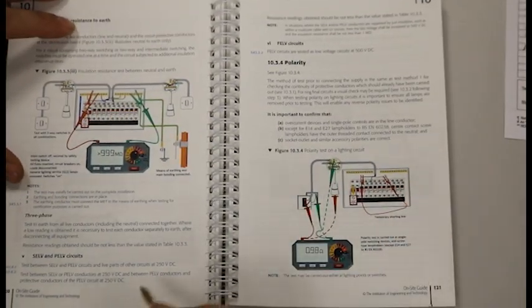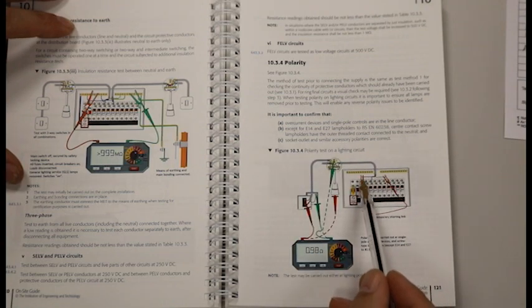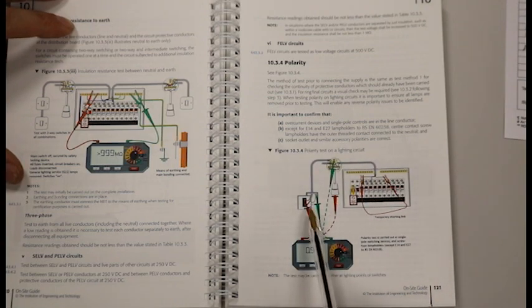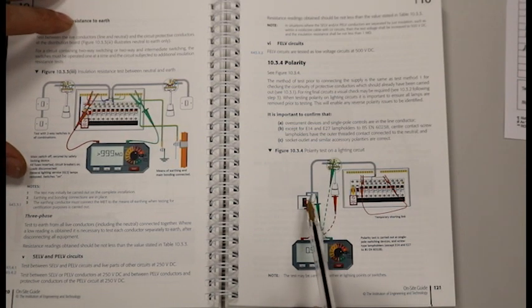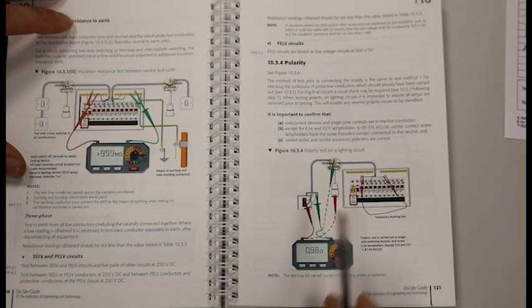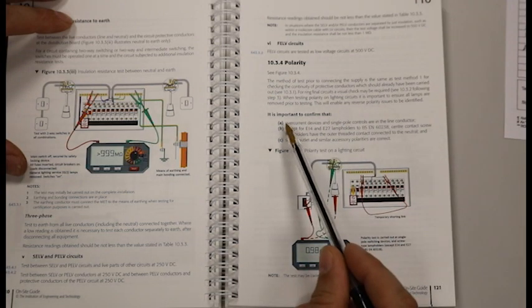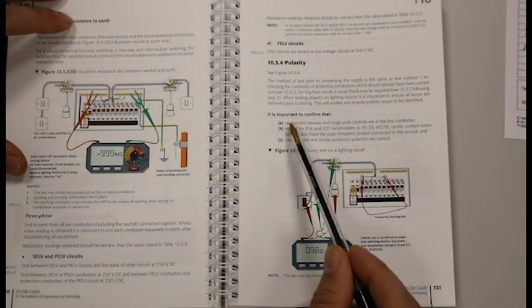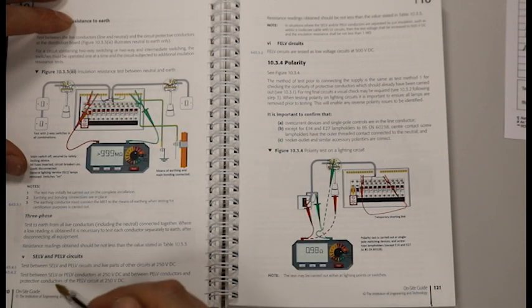Page 121, we have a picture here showing a temporary link between live and earth and then our tester is at our sockets or lighting circuits. We're testing between live and earth which is exactly the test we did for our R1 plus R2. Here we've got further details of polarity test A, B and C which I spoke about earlier on. That is our polarity test complete.